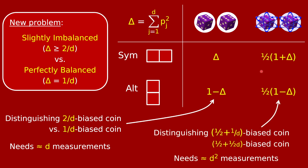In the quantum case, if you call the two outcomes — symmetric subspace and alternating subspace — heads and tails, the probability of heads is either one-half plus 1/d or one-half plus 1/2d. You're trying to distinguish a coin whose bias differs by about 1/2d around one-half. To reliably distinguish these, you need something like d-squared measurements. So if you break your quantum dice into groups of two and put each pair into the sym/alt measure, you'll need proportional to d-squared groups to tell the difference between perfectly balanced and slightly imbalanced.